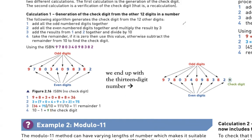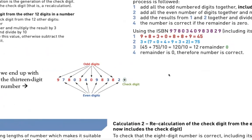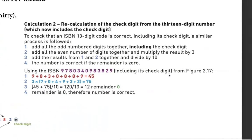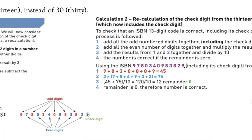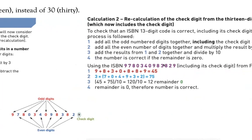The second phase uses this check digit to verify whether a number was entered correctly or not. Imagine I have the same number but this time it includes the check digit — it's now 13 digits. The 9 is the check digit I just calculated. If you entered this number somewhere, the ISBN 13 method will use this procedure to verify if the number was entered correctly based on the check digit provided.